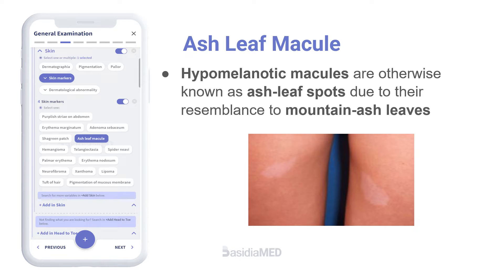Ash leaf spots are a diagnostic manifestation of tuberous sclerosis complex. These are hypomelanotic macules, otherwise known as ash leaf spots, due to their resemblance to mountain ash leaves. They are commonly seen in the trunk and lower extremities.